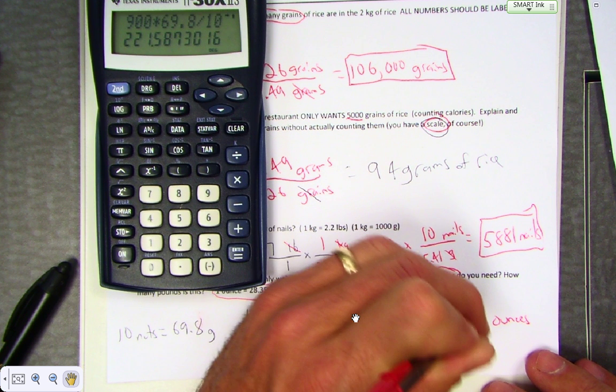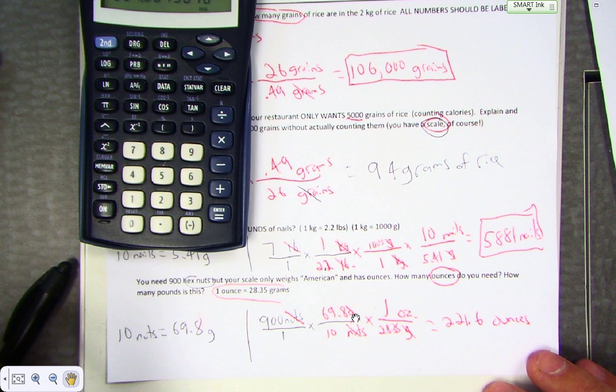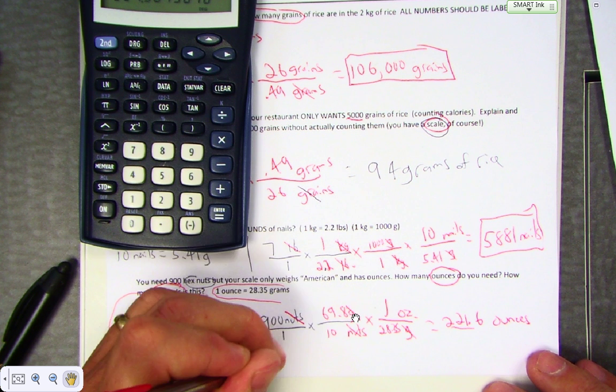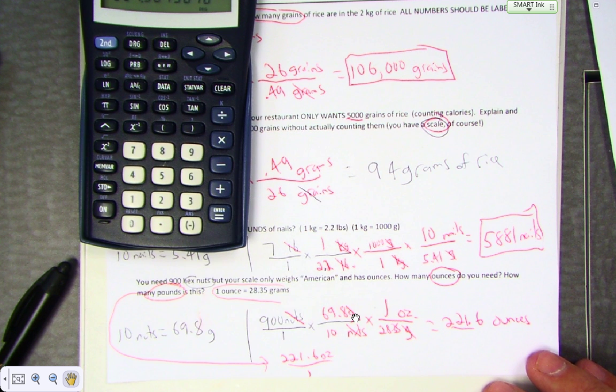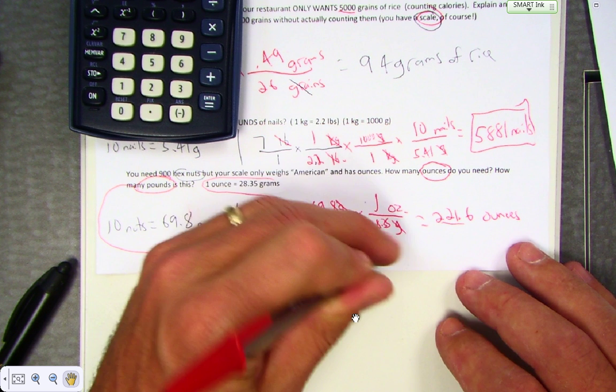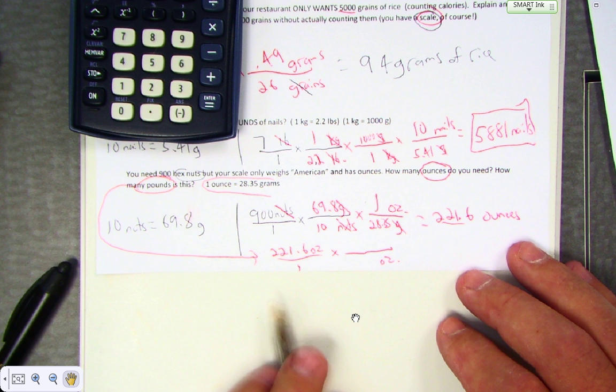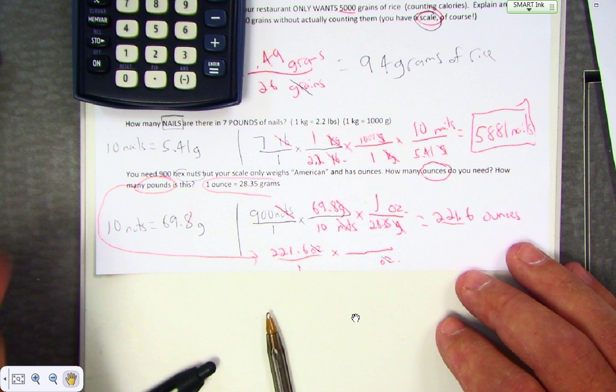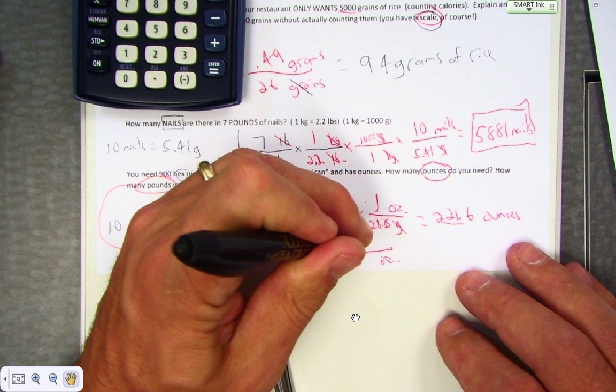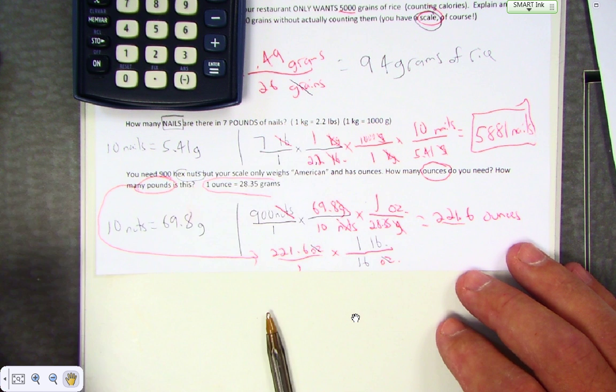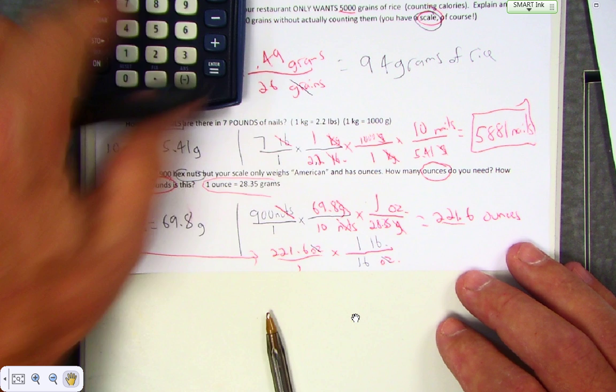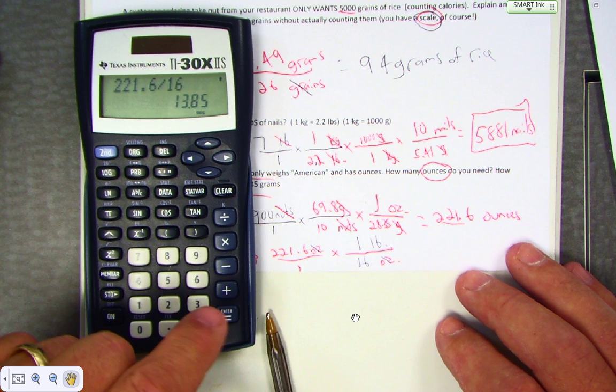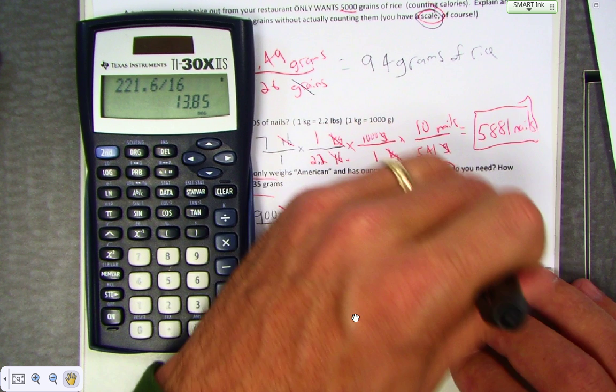221.6 ounces. Wait a minute, there's another question: how many pounds is this? 221.6 ounces, I'll put it over one. I'll get ready to multiply by a fraction. I'll put ounces on the bottom because I don't need it anymore—I need it to cross off. What I really want is pounds. Do I know any relationship between ounces and pounds? Not sure if you know this, but if you did, one pound is 16 ounces, one of those facts that maybe you already knew. 221.6 divided by 16: 13.9 pounds. I rounded a little bit.